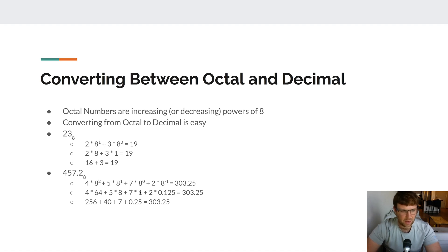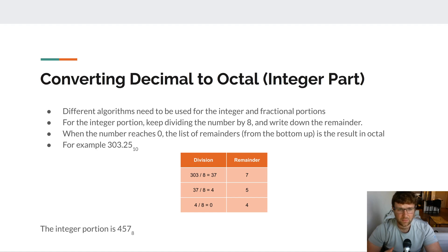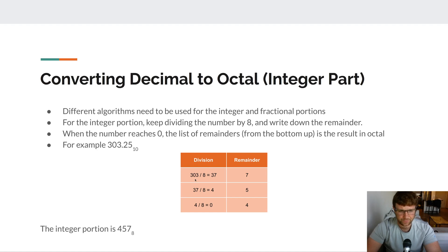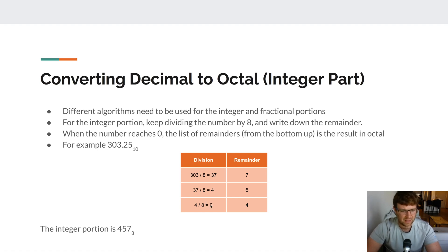Converting from decimal to octal is done in two parts — integer and fractional. For the integer part, keep dividing by 8 and write down the remainder. When the number reaches zero, read the remainders from bottom to top. For example, with 303: 303 ÷ 8 = 37 remainder 7; 37 ÷ 8 = 4 remainder 5; 4 ÷ 8 = 0 remainder 4. Reading remainders bottom to top gives 457, so the integer portion of 303 in octal is 457.